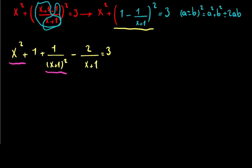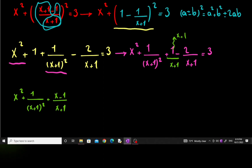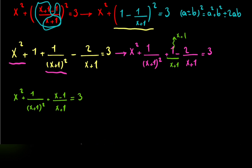Continuing, I don't want to work with those terms separately since they're well-suited to form a square root of something. So I can write x squared plus 1 divided by x plus 1 squared, plus 1 minus 2 divided by x plus 1, equal to 3. Using the same denominator — multiplying 1 by x plus 1 — we get x plus 1 over x plus 1, which gives us x squared plus 1 divided by x plus 1 squared, plus x minus 1 divided by x plus 1, equal to 3.